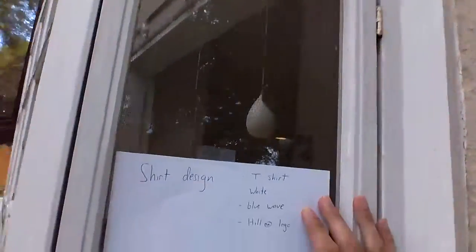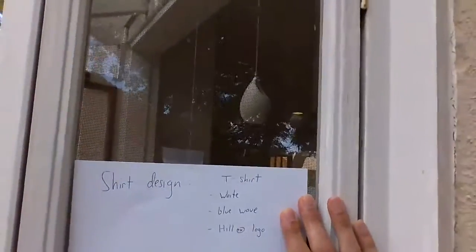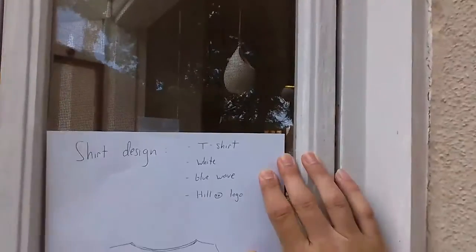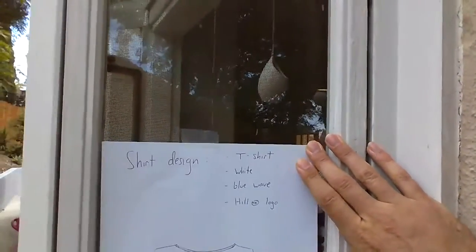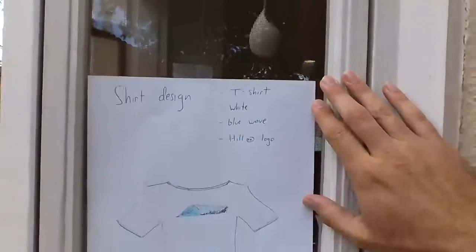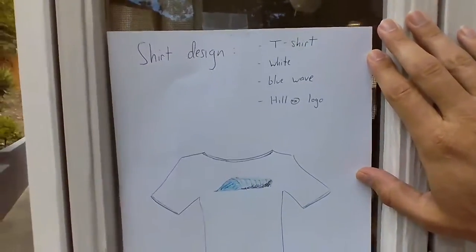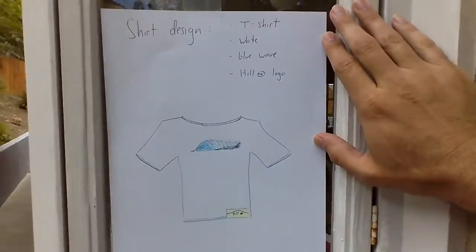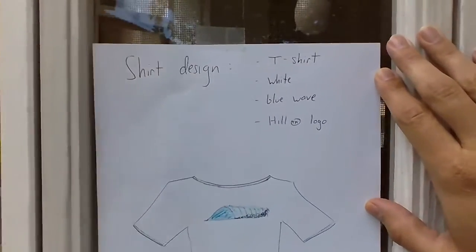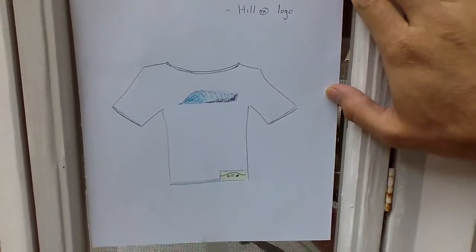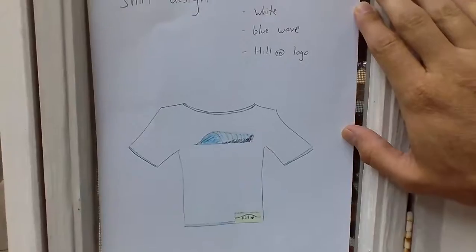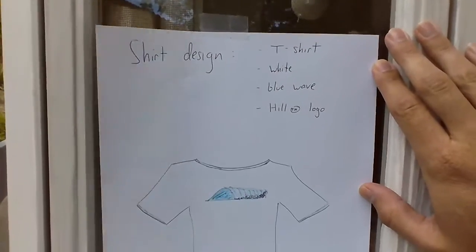For example, I would put something like a t-shirt, white, blue wave, and Hill logo — that's what I wanted to include in my shirt, and there it is. That's the design and that's the shirt I made. Pretty simple, just wanted a wave on it. Hill logo — got that all taken care of.